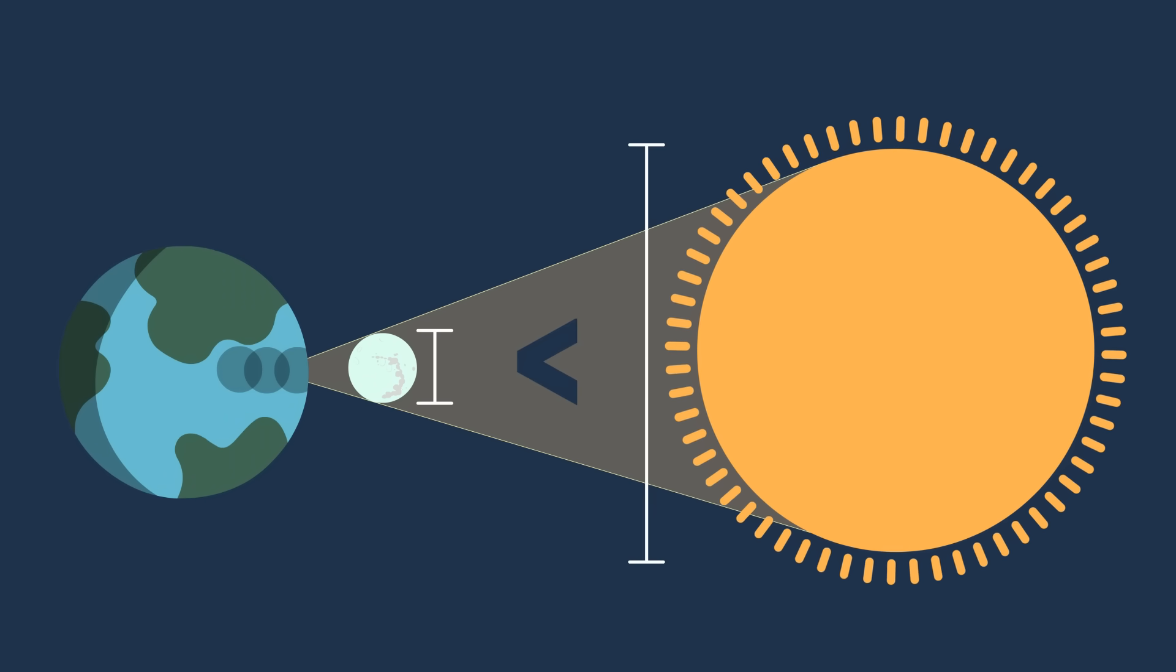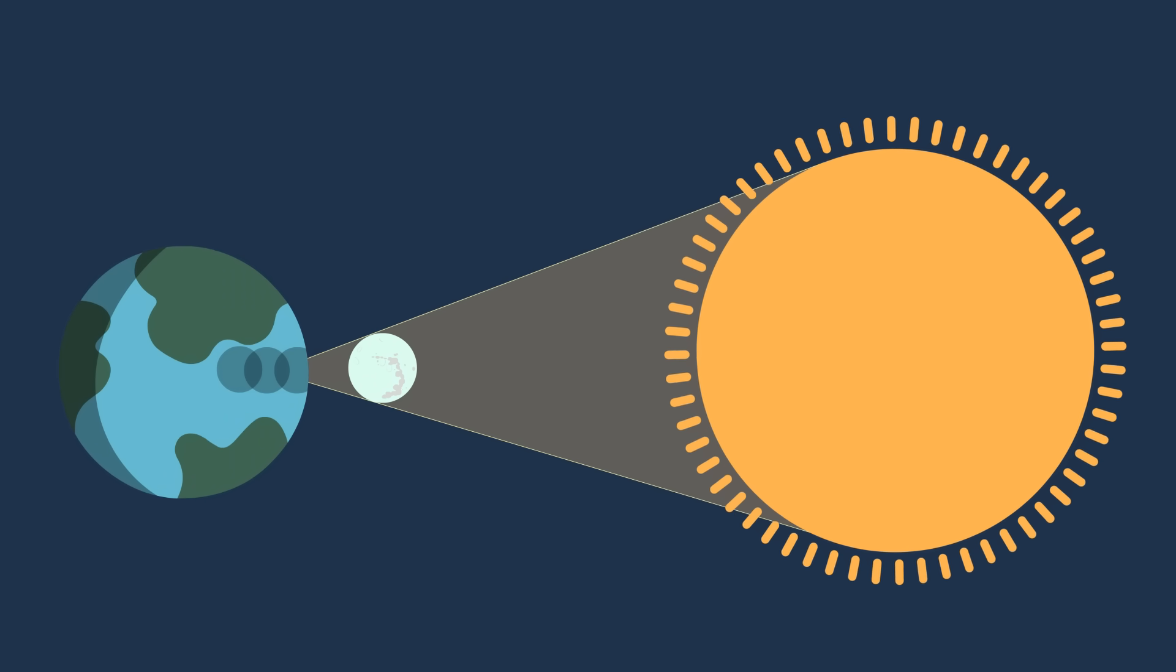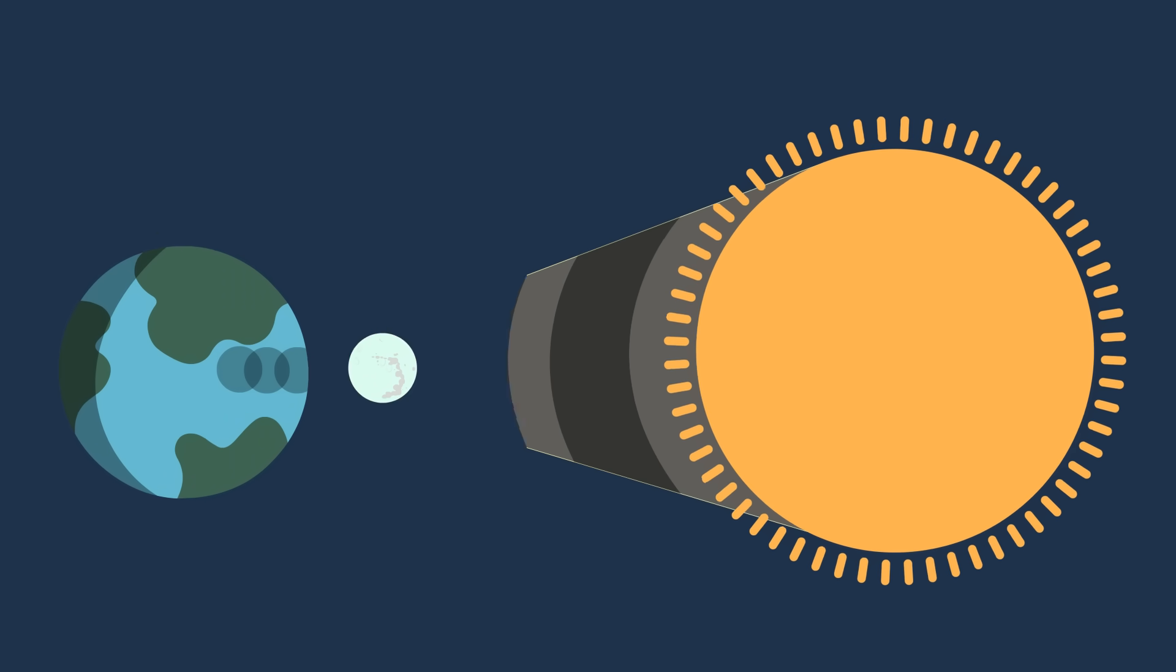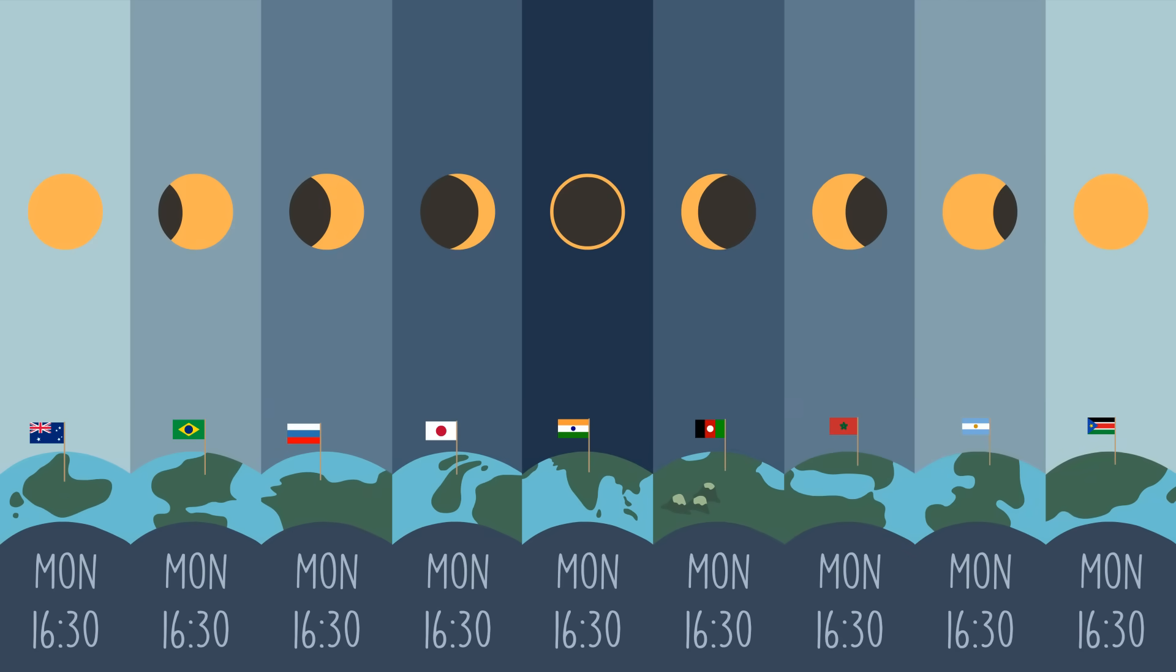Since the Moon is very small in front of the Sun, it only blocks a part of it. Hence, a solar eclipse cannot be seen from every part of the Earth, but only from the locations where the shadow of the Moon falls.